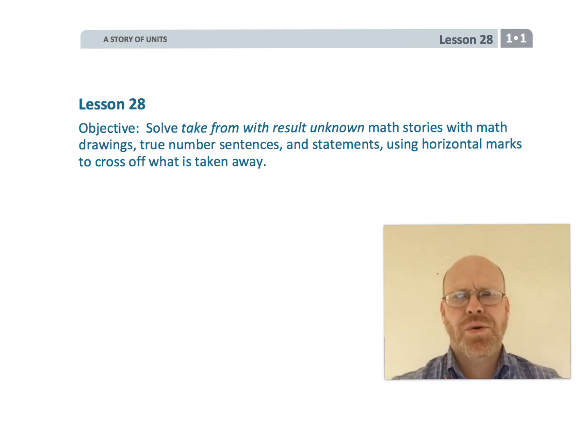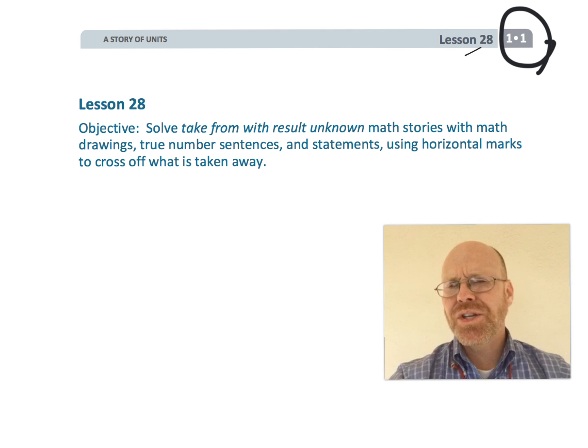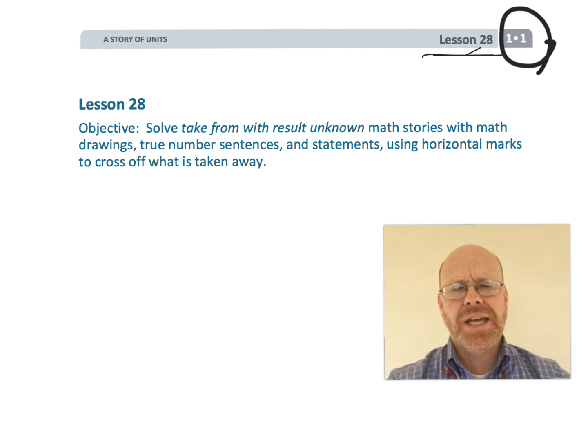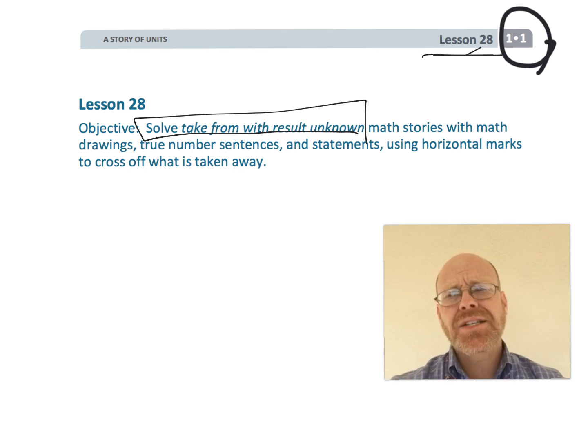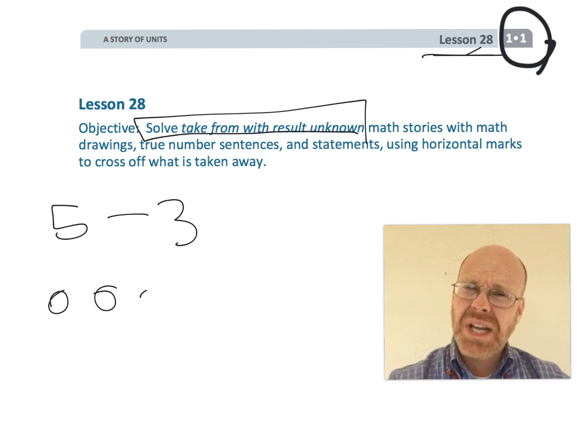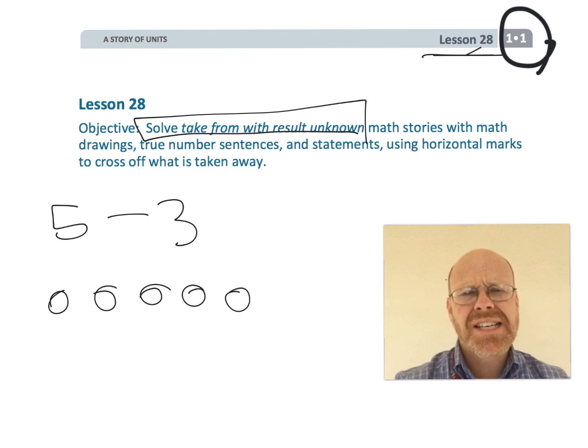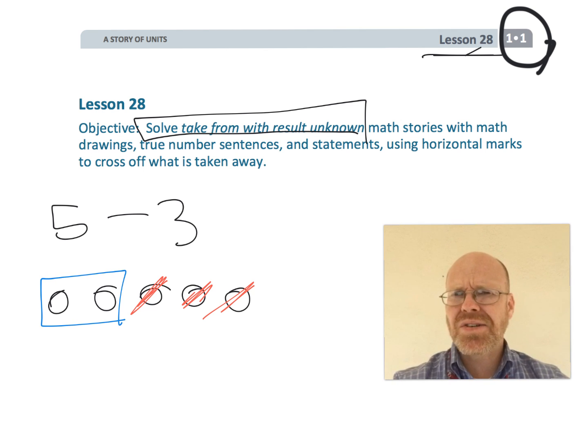All right, this is first grade, module 1, lesson 28. In this lesson, we're going to do the classic solving take-from problems with the result unknown. So that's the basic 5 minus 3, and then the idea is you have 5 dots, you subtract 3, meaning you cross off 3 dots. It's a very traditional way of thinking about subtraction, so let's get started.